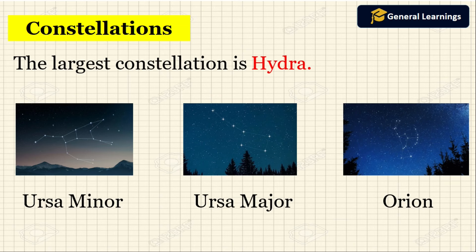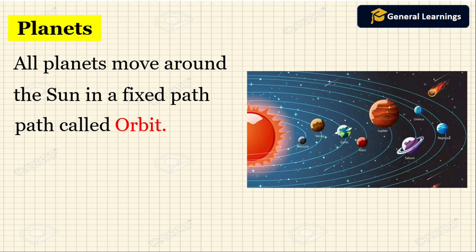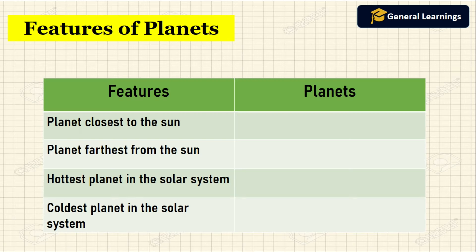Next we are going to see about planets. We already learned that there are eight planets in our solar system. All planets move around the sun in a fixed path called orbit. The planets have no light. They get heat and light from the sun.